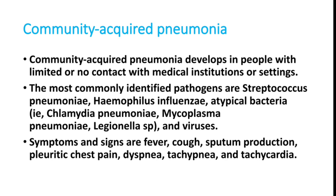Most of the time pneumonias are due to viruses, but bacteria also produce pneumonia. A major difference between viral and bacterial pneumonia is that viral pneumonia presents with bilateral infiltrates, whereas bacterial pneumonia mostly presents with a unilateral infiltrate.